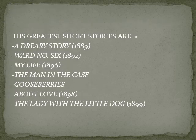Anton Chekhov's greatest short stories include A Dreary Story, 1889; Ward No. 6, 1892; My Life, 1896; The Man in a Case, Gooseberries, and About Love, all 1898; and The Lady with the Little Dog, 1899. These are the famous short stories of Chekhov.